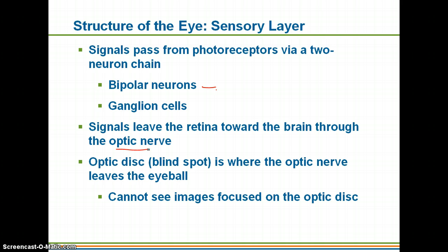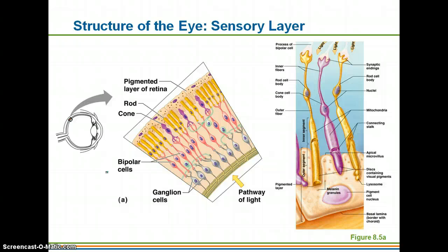The optic disc is your blind spot — it is where the optic nerve leaves the eyeball. The optic nerve is so thick that that small area does not actually have a retinal layer in front of it. So if an image is being focused on that spot, depending on its position, you actually will not see it.